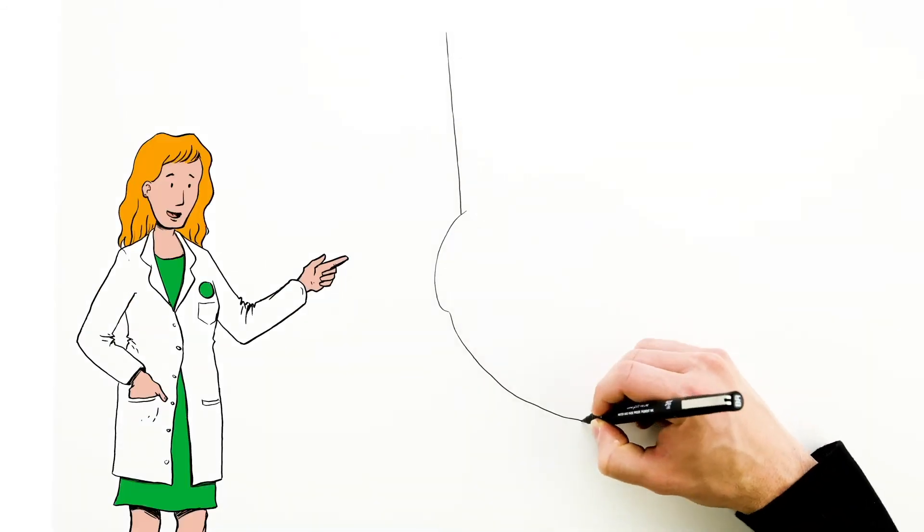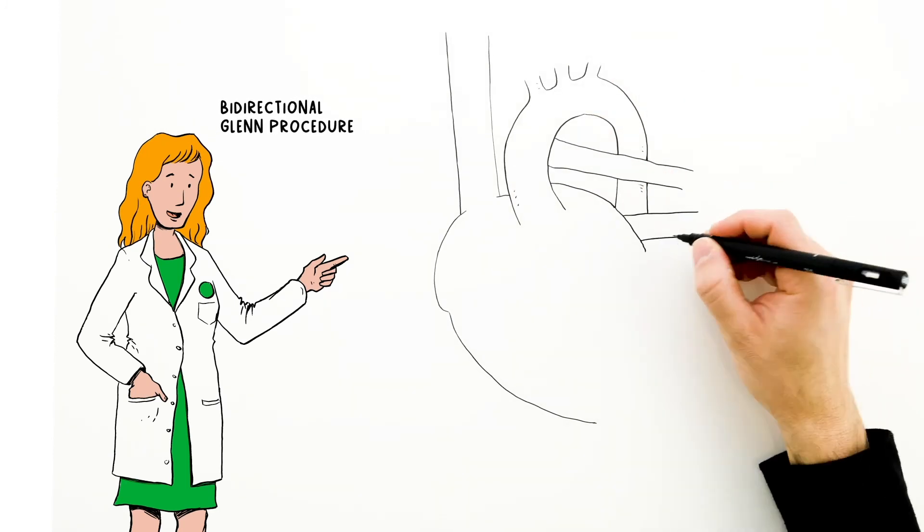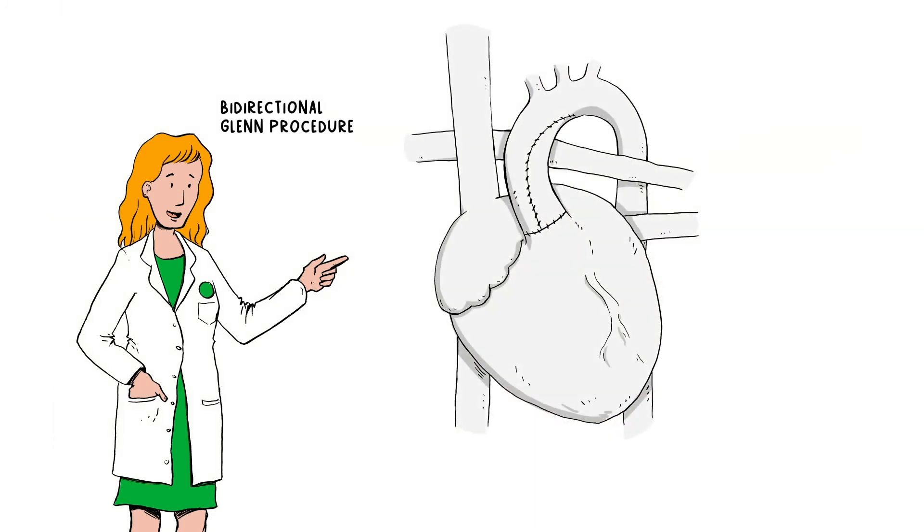Additional procedures include the bidirectional Glenn procedure. Typically performed when a child is three to five months old, it connects the large vein draining the upper body to the lung arteries to bring blue blood directly to the lungs.